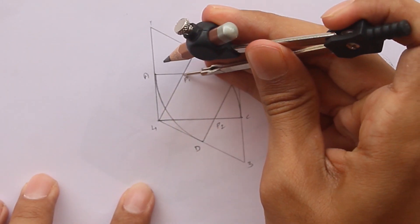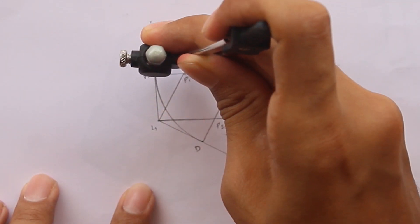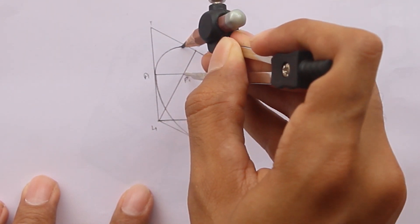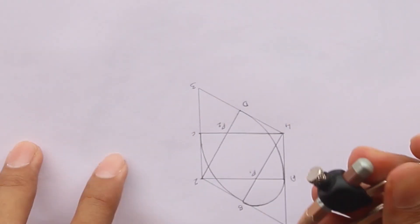Now place the compass on point P1, take a measure of P1 to A and join from A to B. Similarly, for the opposite side,